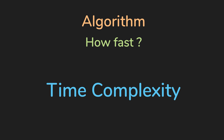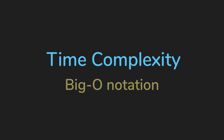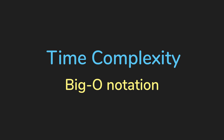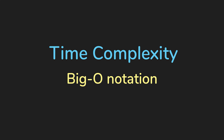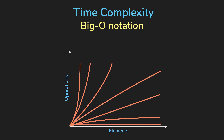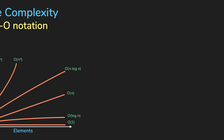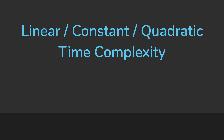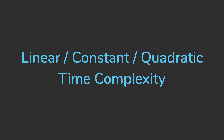Time complexity is often expressed with big O notation. The big O is used to classify algorithms by how they behave as the input size increases. Different time complexities include linear, constant, and quadratic.